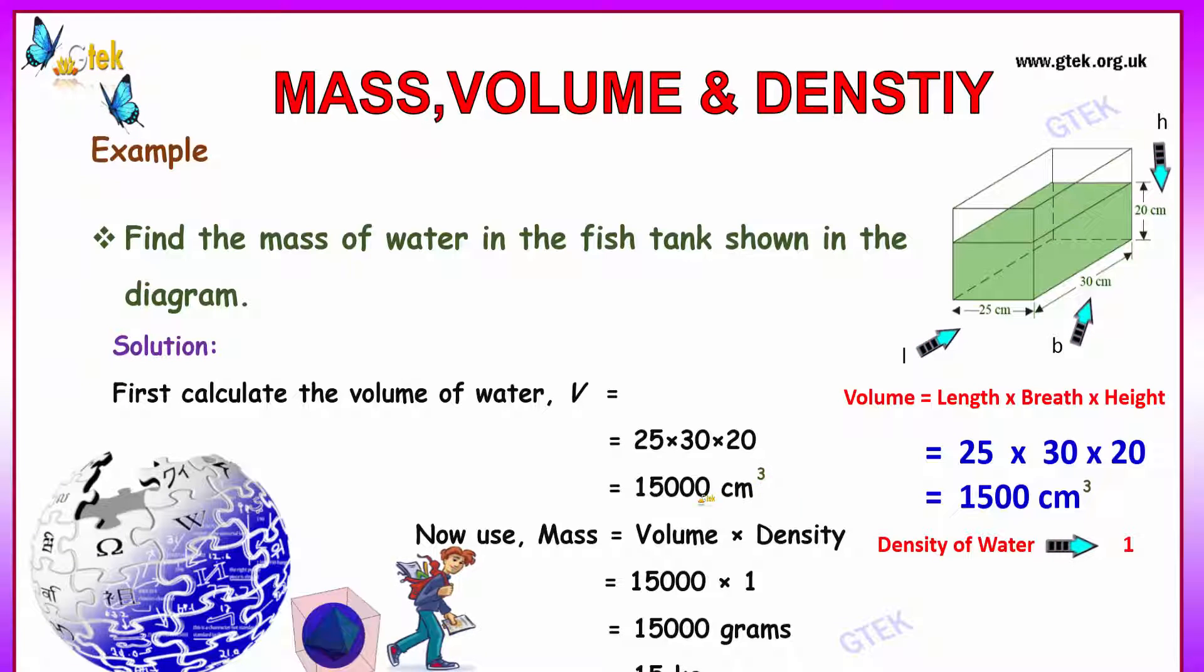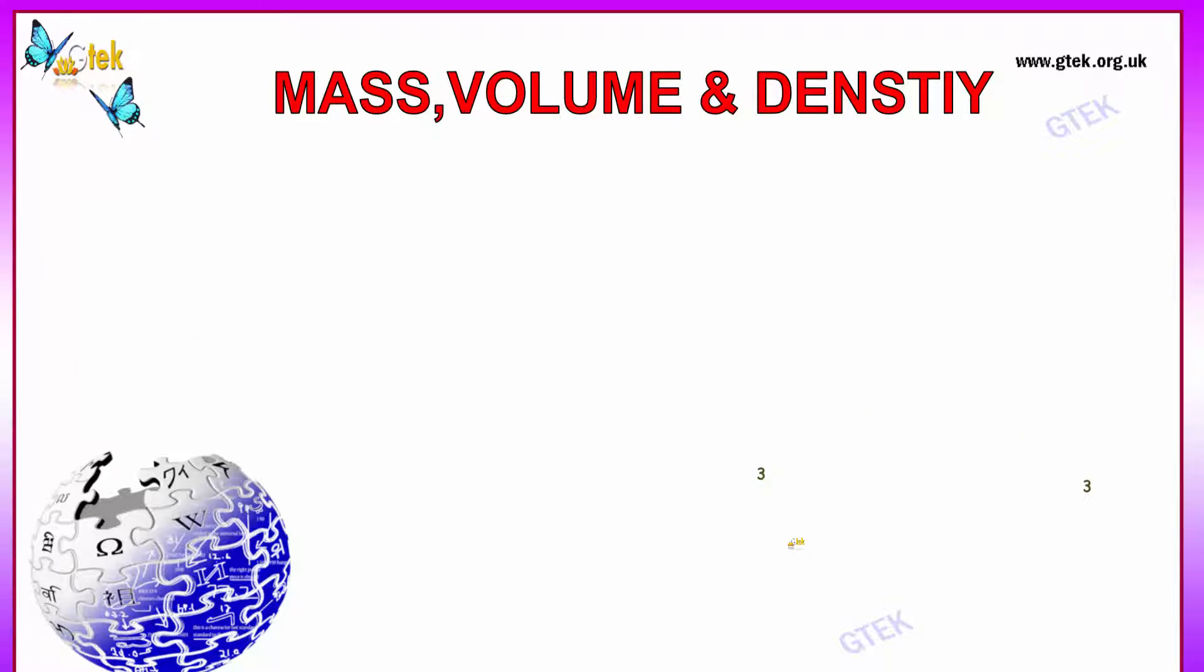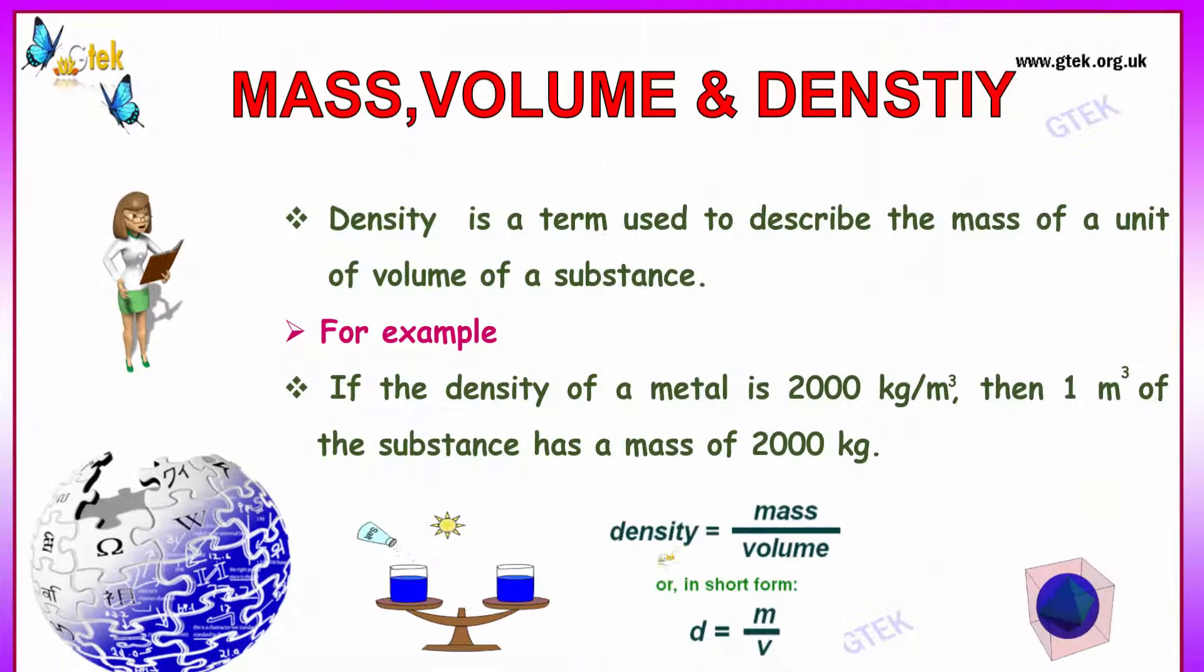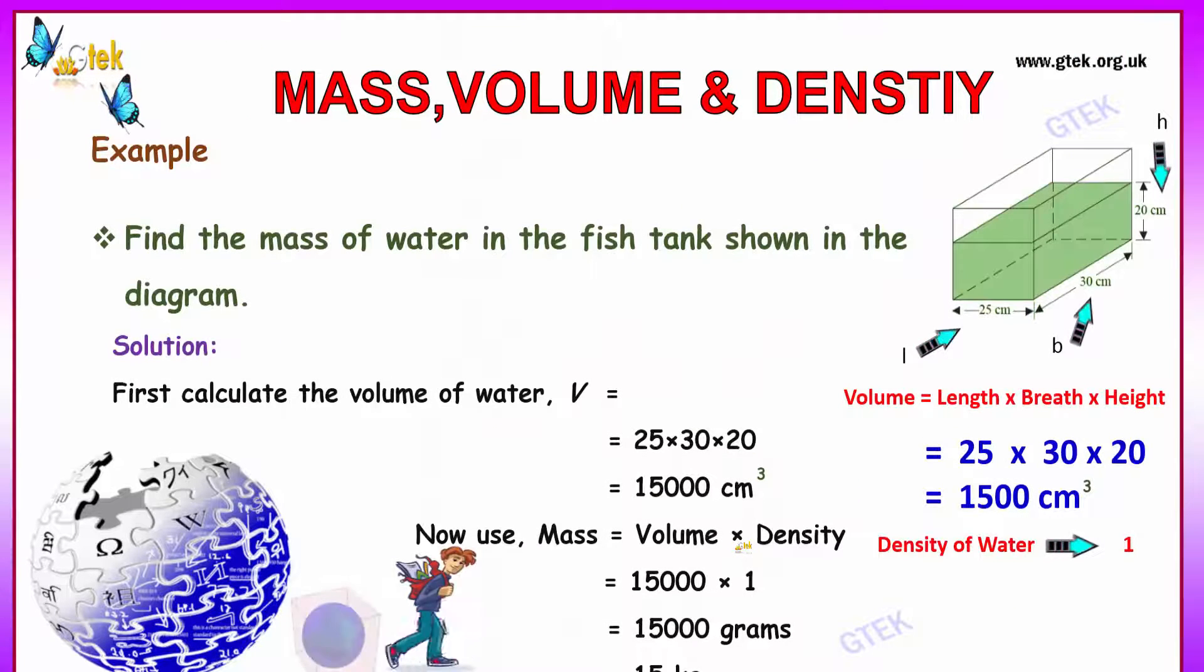As the formulation is mass equals volume times density, so 15,000 times, since we have water, the density of water is 1. So it is 15,000 grams.